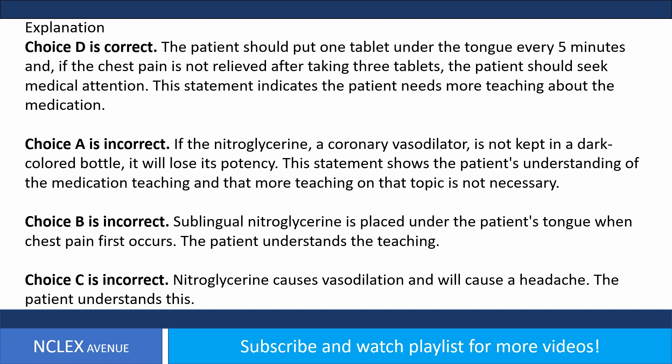Choice B is incorrect. Sublingual nitroglycerin is placed under the patient's tongue when chest pain first occurs. The patient understands the teaching. Choice C is incorrect. Nitroglycerin causes vasodilation and will cause a headache. The patient understands this.